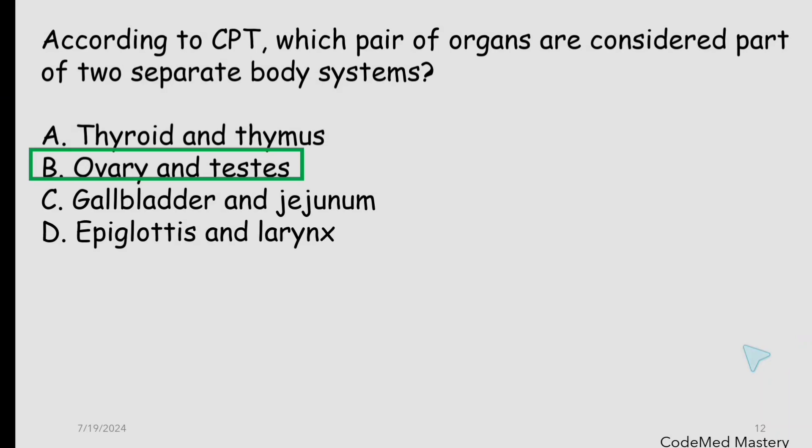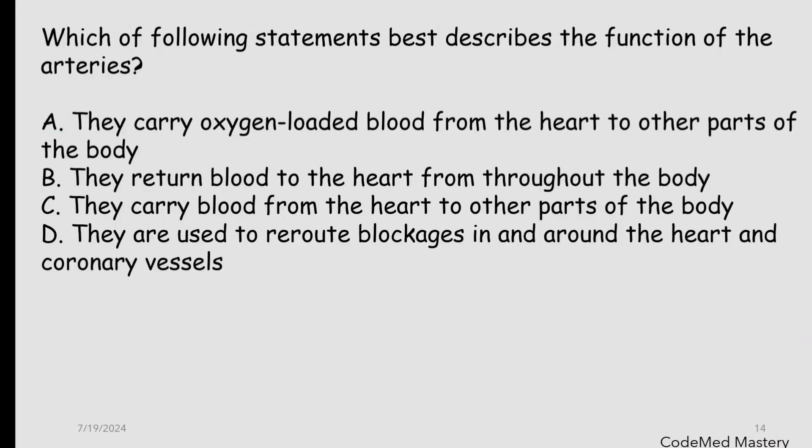The thyroid and thymus are both part of the endocrine system. Gallbladder and jejunum are part of the digestive system. Epiglottis and larynx are part of the respiratory system. But ovary and testis are considered part of the endocrine system as well as the male and female genital systems. Next question: which of the following statements best describes the function of arteries?